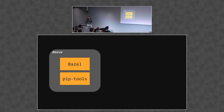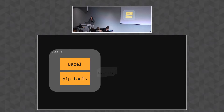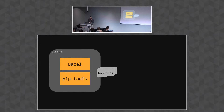Our solution, which we call Beave, is a set of tools built around Bazel and PipTools. PipTools is an open source project that's used by pipenv — it does pipenv's heavy lifting. Beave is what we use to manage our Python dependencies. It's composed of Starlark macros, rules, aspects, and some command line tools that we wrote.